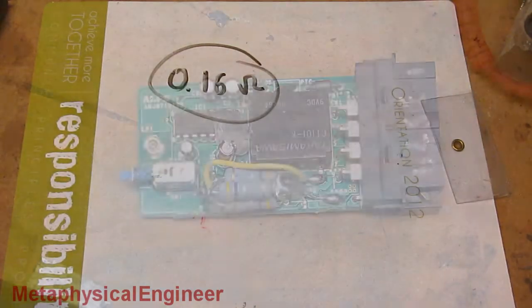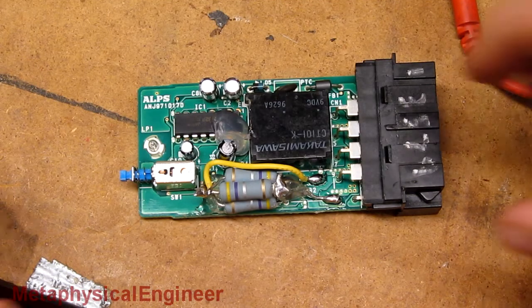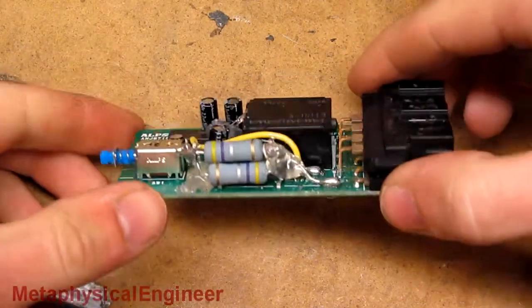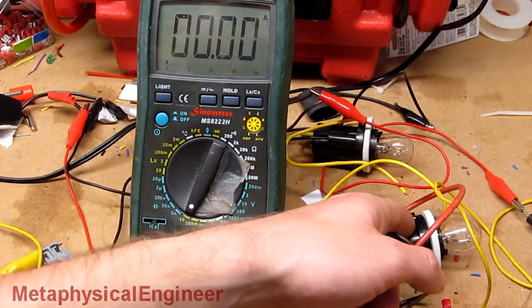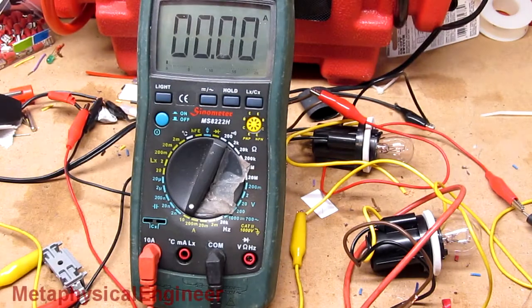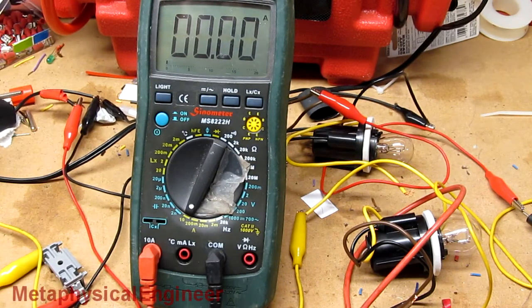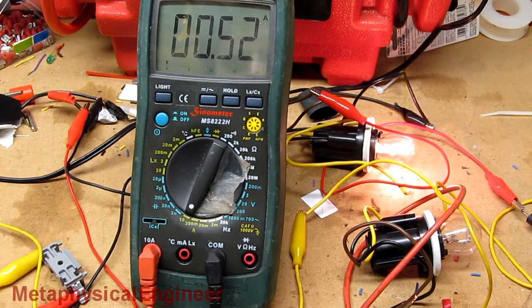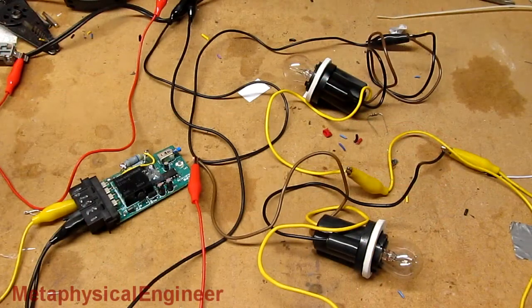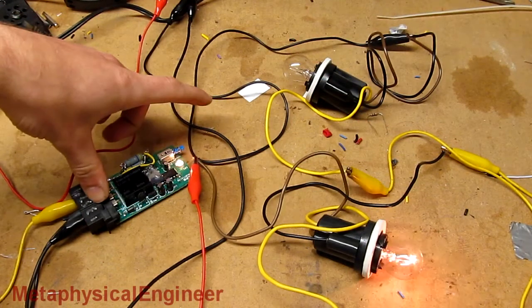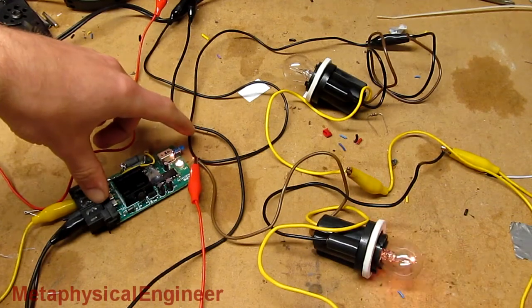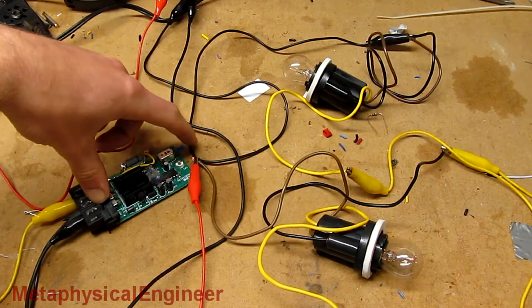Went a little bit easier on the hot glue this time. I have the high power filament and the low power filament of two 1157 bulbs wired in series. When they get power, they draw 0.52 amps. Ready to test. There's the correct flashing rate with the lower current.